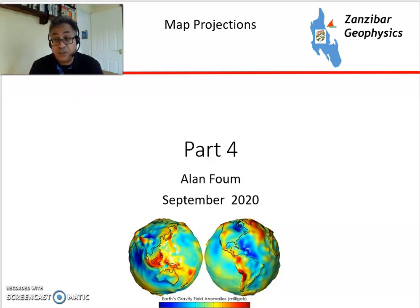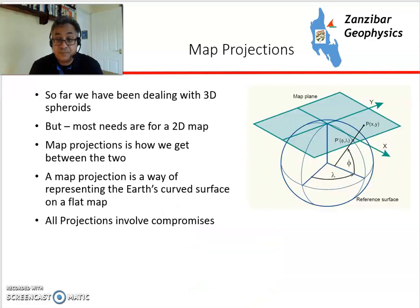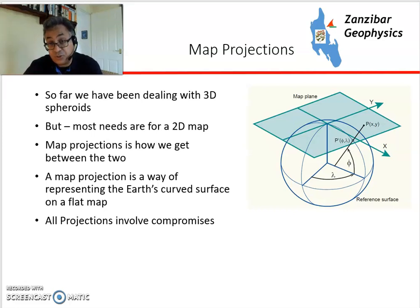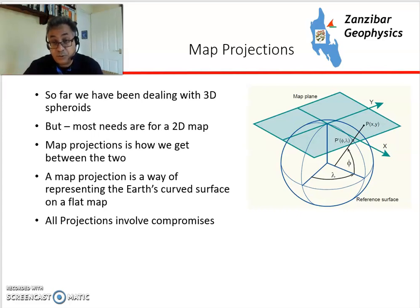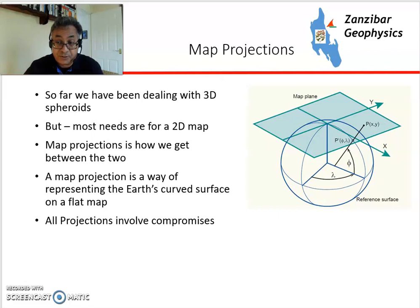In part 4 I'll talk a little bit about map projections. We'd like to live in a flat Earth as geologists — it makes life a lot easier working with maps, computer systems, 3D geological models and reservoir engineering models. Unfortunately the world isn't flat and we need to move from a curved surface, looking at ellipsoids covered in part 2, to a flat map. This is done using a system called a projection, where you project from a curved surface onto a flat map. All projections involve compromises.